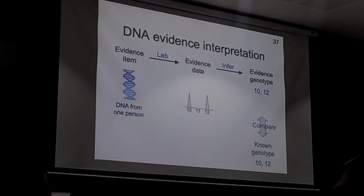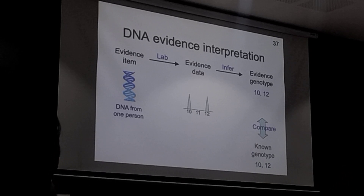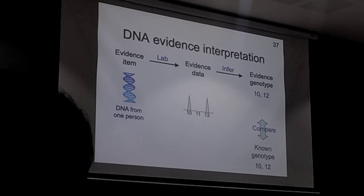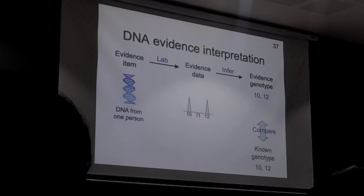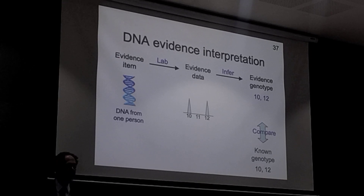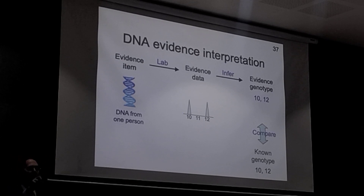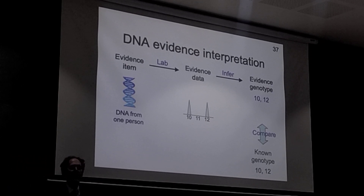Obviously one can infer the genotype from this. I've run courses on this — one of my children signed me up to give DNA talks to a science camp since third grade. What I found is that third graders understand: if I see a 10 and a 12, the genotype is a 10 and a 12.